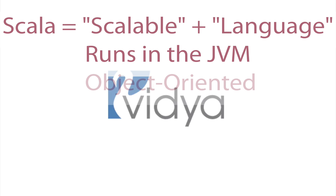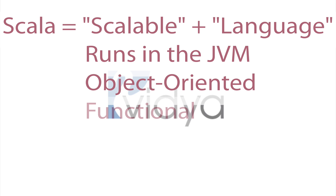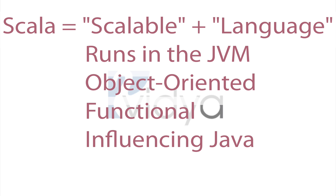Like Java, Scala is object-oriented, but like Haskell, Scala is also functional with a powerful static type system. Scala has actually been around a lot longer than you might think — it has been publicly available since 2004. But over the last several years, it has gained enough traction to motivate many prominent open source projects and even drive the evolution of Java itself. Let's dive into some code and see for ourselves, but keep in mind it is more important to understand the big picture than every little detail.